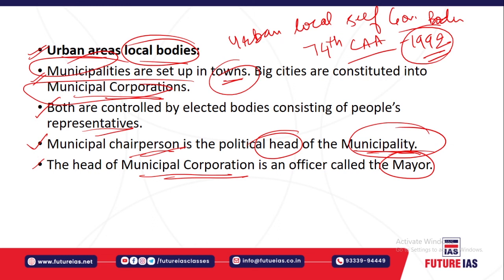Municipal corporations are local level urban self-governing bodies set up for big cities, while municipalities are set up for towns. Local level self-governing bodies are basically set up by two acts: the 73rd Constitutional Amendment Act providing the panchayati raj system, and the 74th Constitutional Amendment Act providing urban level self-governing bodies like municipal councils, municipalities, and municipal corporations.